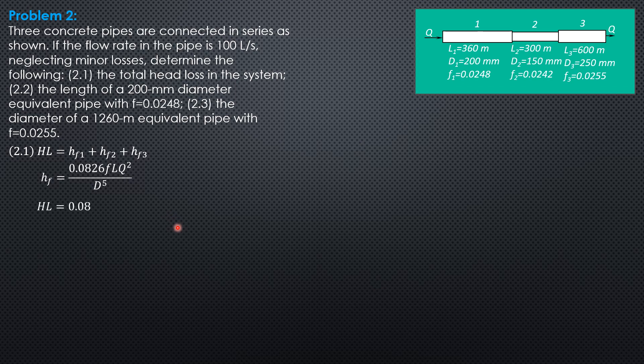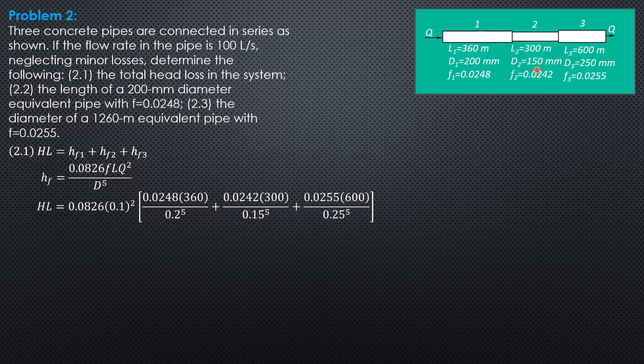so we have head loss 0.0826 times 0.1 square times friction factor 0.0248 length 360 over diameter 0.2 to the fifth, plus 0.0255 times 600 over 0.25 to the fifth.